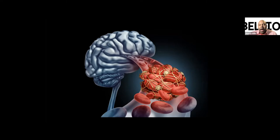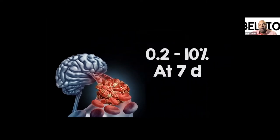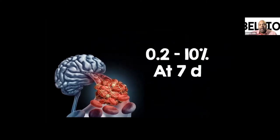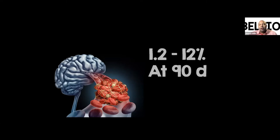We know that TIA patients are at a much higher risk for developing a stroke. At seven days, it's anywhere between 0.2% and 10% of these patients who will go on to have a stroke, depending on which study you look at. At 90 days, that number goes up even higher — 1.2% versus 12% will have a stroke at 90 days.